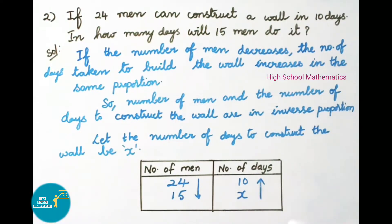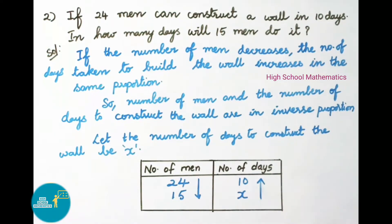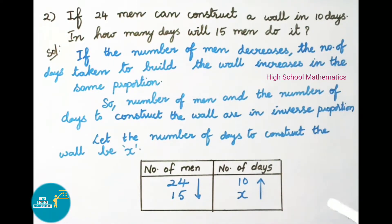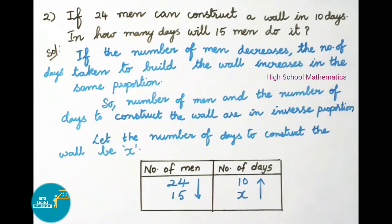In this tabular form we have taken number of men and number of days. 24 men have taken 10 days to construct a wall. 15 men will take how many days to construct the wall — we have to find. So let the number of days be x.